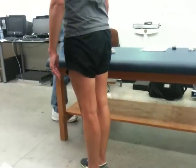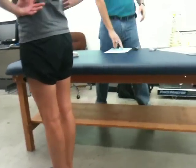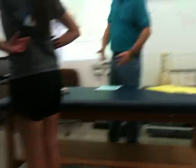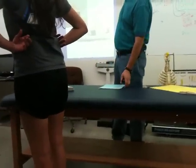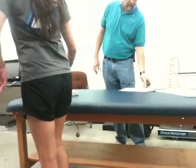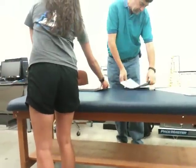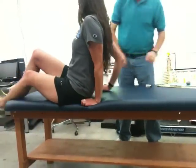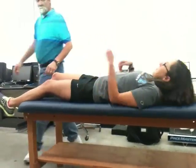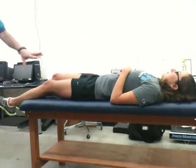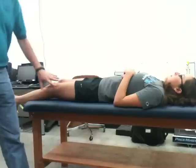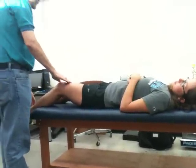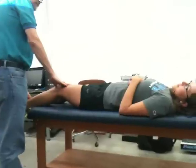That's the Trendelenburg test. The next test is the Thomas test. In the Thomas test, we're looking for tightness of the iliopsoas. Let's say this is the injured leg — I want you to keep this leg on the table.